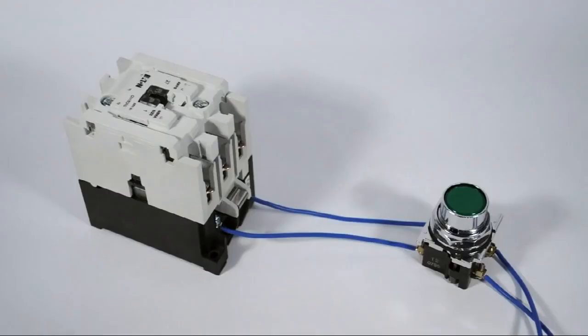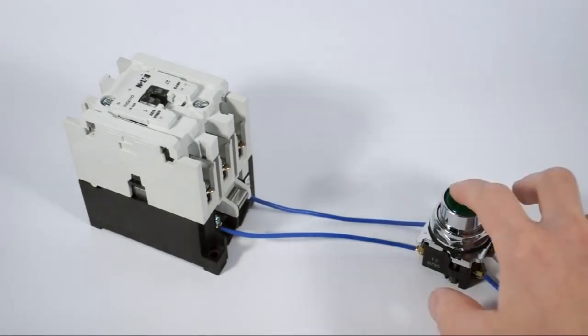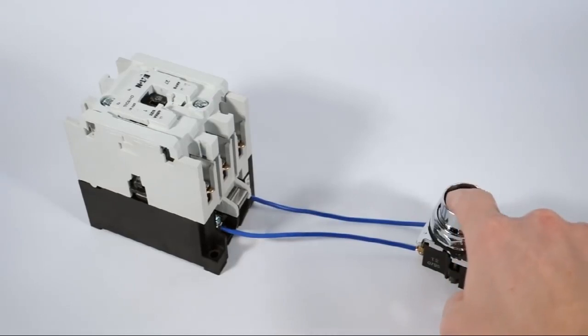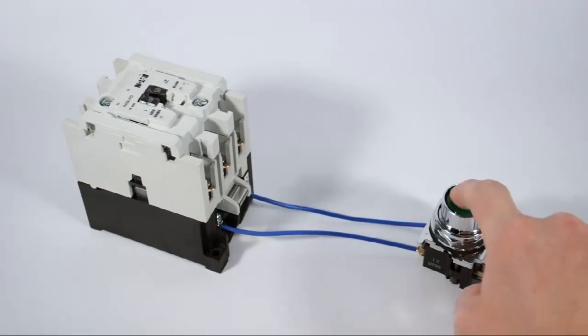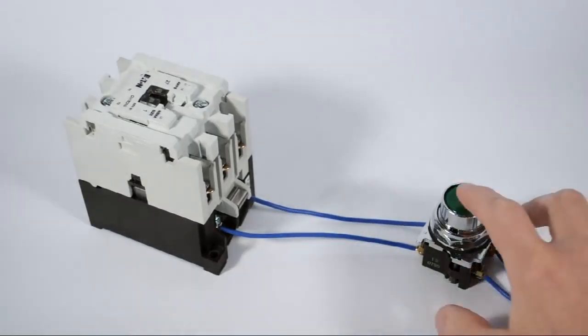What I've done here is I've connected a green start button to control power and connected the other side of the push button to the coil inside of one of Eaton's Freedom Series contactors. When I push the start button, you can see the small black rectangle on top of the contactor move up and down. That is the top of the armature showing through, which is moving inside the contactor.